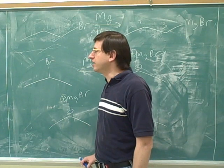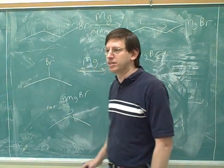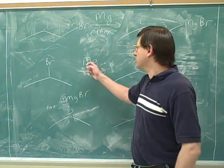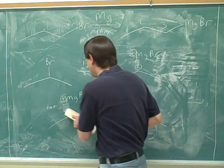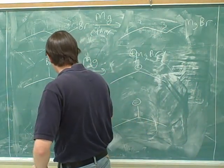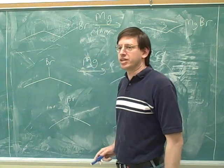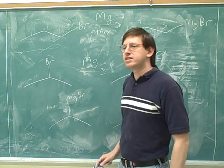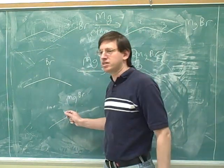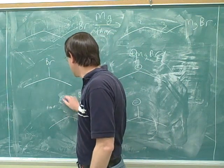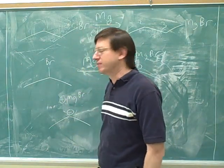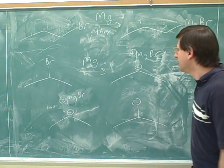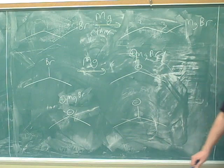Grignards are a very important type of reagent - they'll be important on the exam and for the whole rest of the course. The automated process is: first, do the insertion and insert the magnesium between the bromine and the carbon; second, erase the covalent bond between the magnesium and the carbon; and only last should you put in the charges. Don't do anything to the bromine.